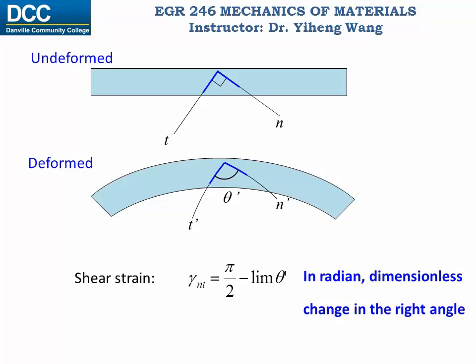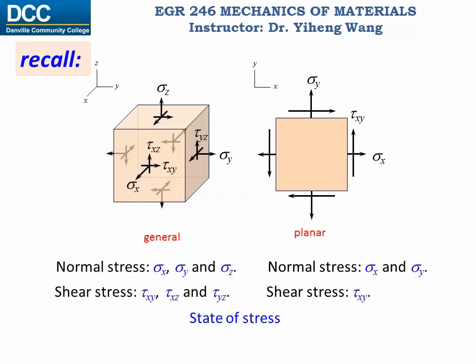So now we have the definition of normal strain and shear strain. Recalling the state of stress for a particle: for the general three-dimensional state of stress, we can fully characterize the state of stress by six stress components — three normal stresses sigma x, sigma y, and sigma z, and three shear stresses tau xy, tau xz, and tau yz. And for the planar state of stress, we have two normal stress components and one shear stress component, overall three.